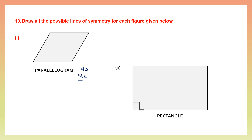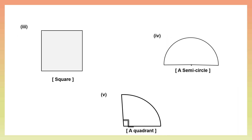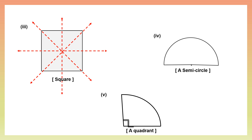A rectangle has a vertical line of symmetry and a horizontal line of symmetry, so there are two lines of symmetry for a rectangle. The third figure is a square, which has four lines of symmetry. The fourth figure is a semicircle, which has only one line of symmetry that cuts both sides into two equal parts. The next figure is a quadrant, where the line of symmetry cuts it into two equal angles.